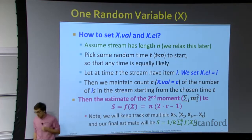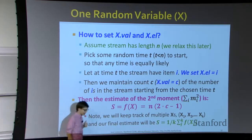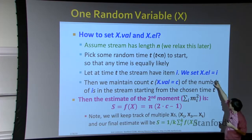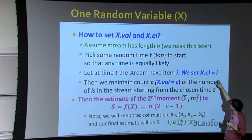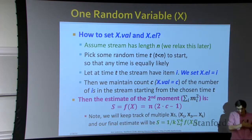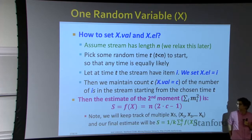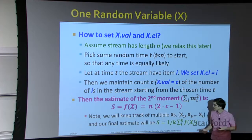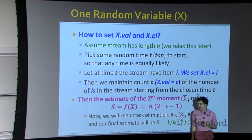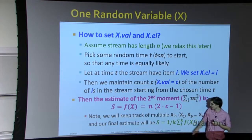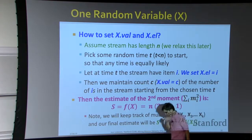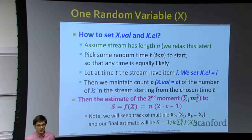To summarize the AMS algorithm: I have a stream, I wake up at a random time t, I initialize X with the item at that position, and I count how often that item appears from t onward. At the end of the stream, my estimate for the second moment is n × (2c − 1) for one random variable. Since I maintain multiple random variables, I compute multiple estimates and take the average.